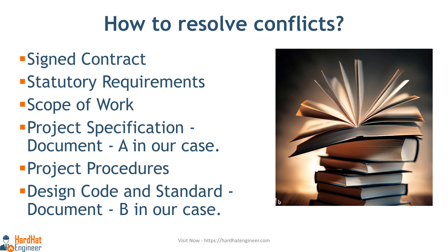So when faced with conflicting acceptance criteria, simply refer to the order of precedence to figure out which set of criteria has higher precedence and should be followed. It is like having a compass that guides you towards clarity and consistency in decision making.